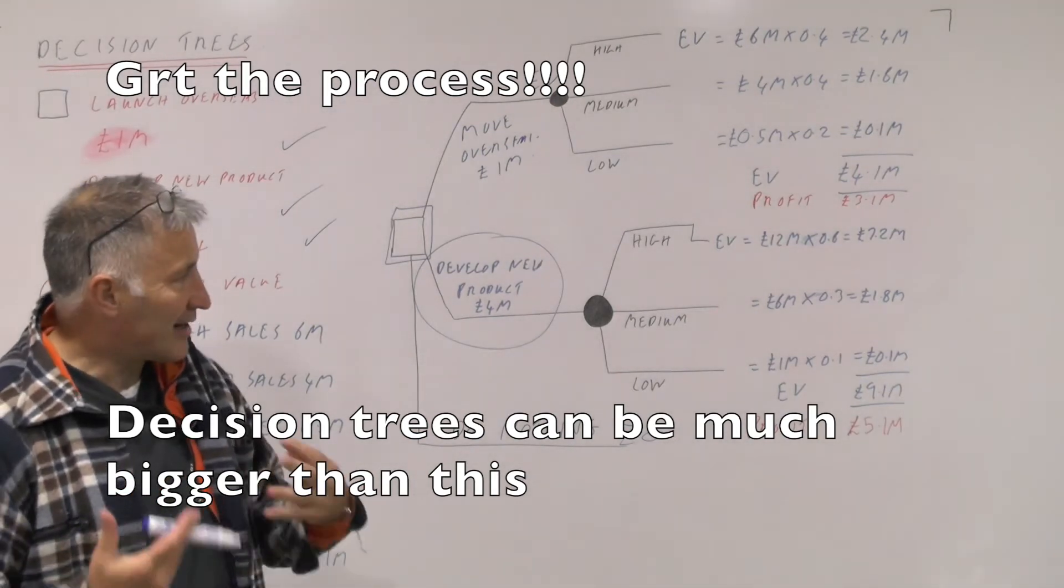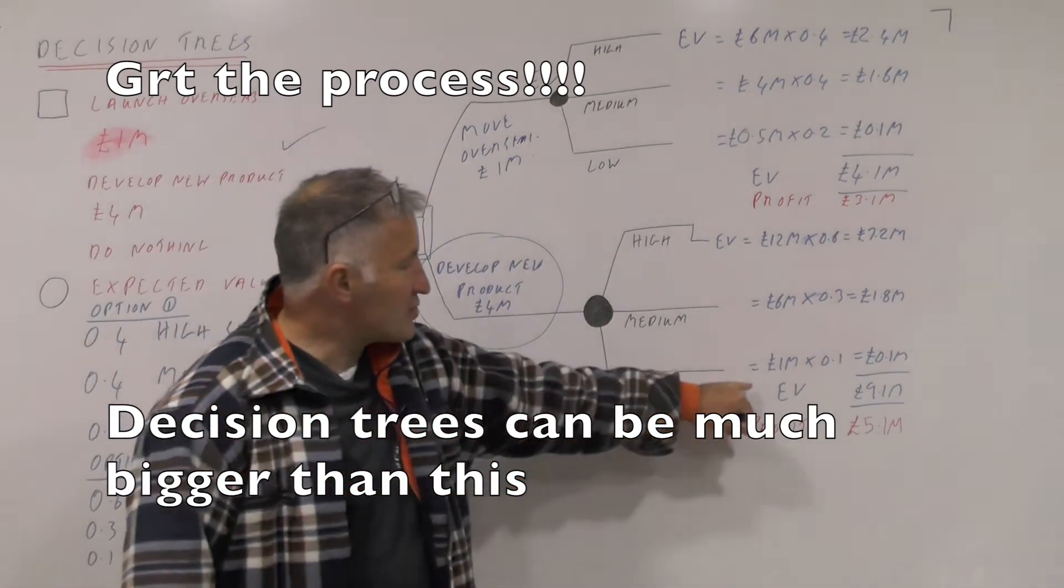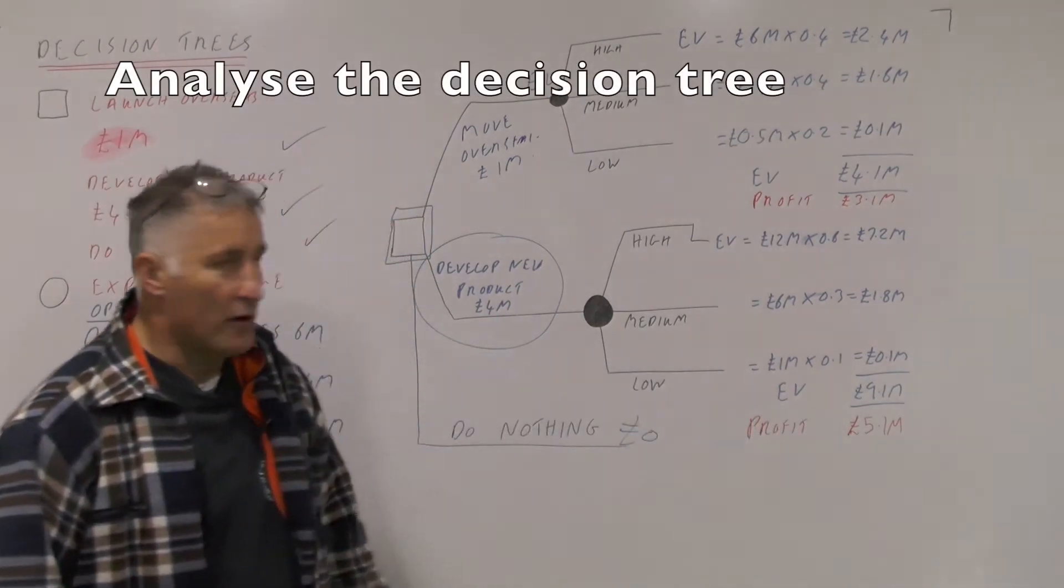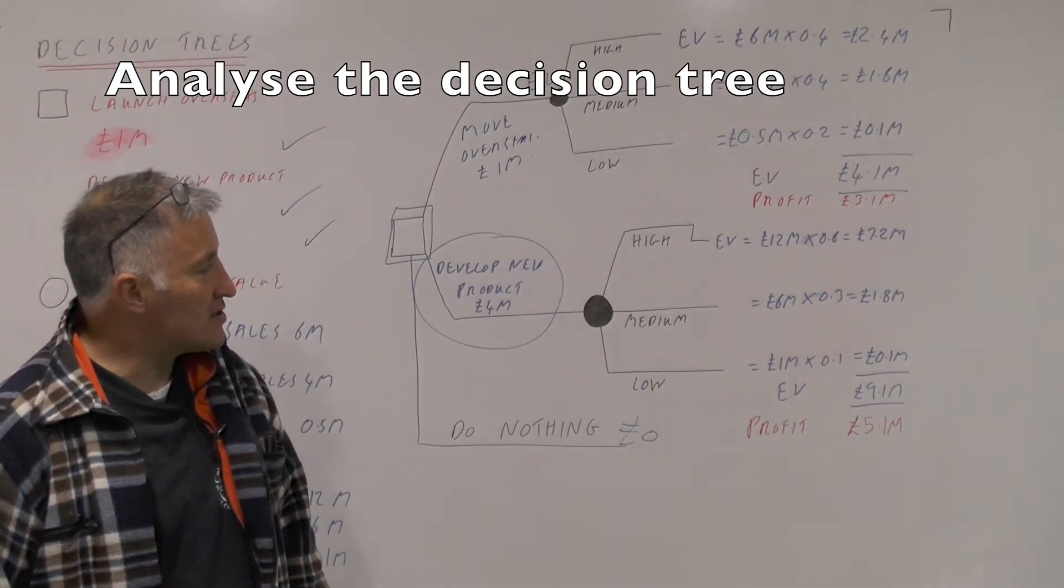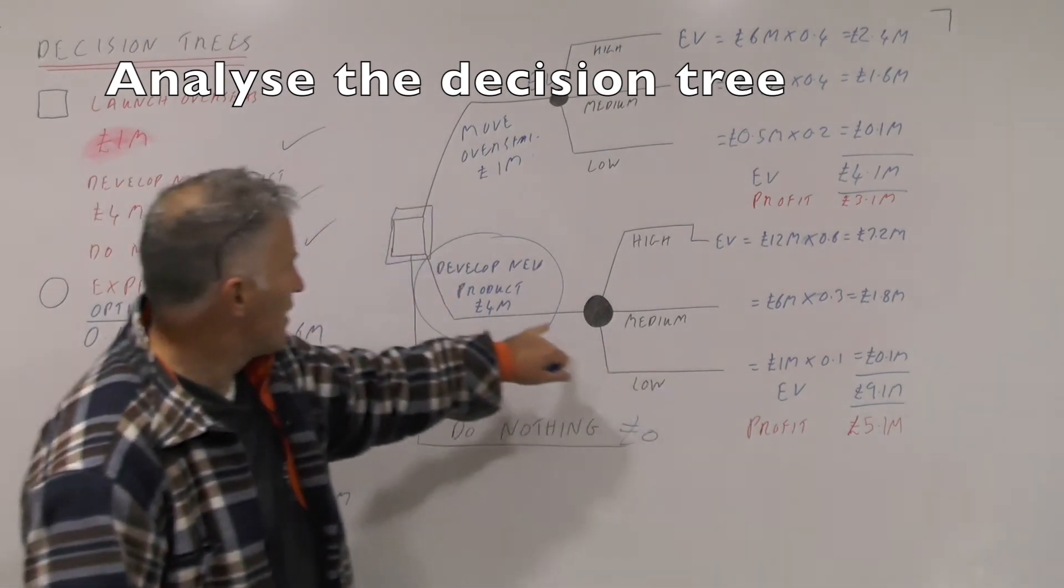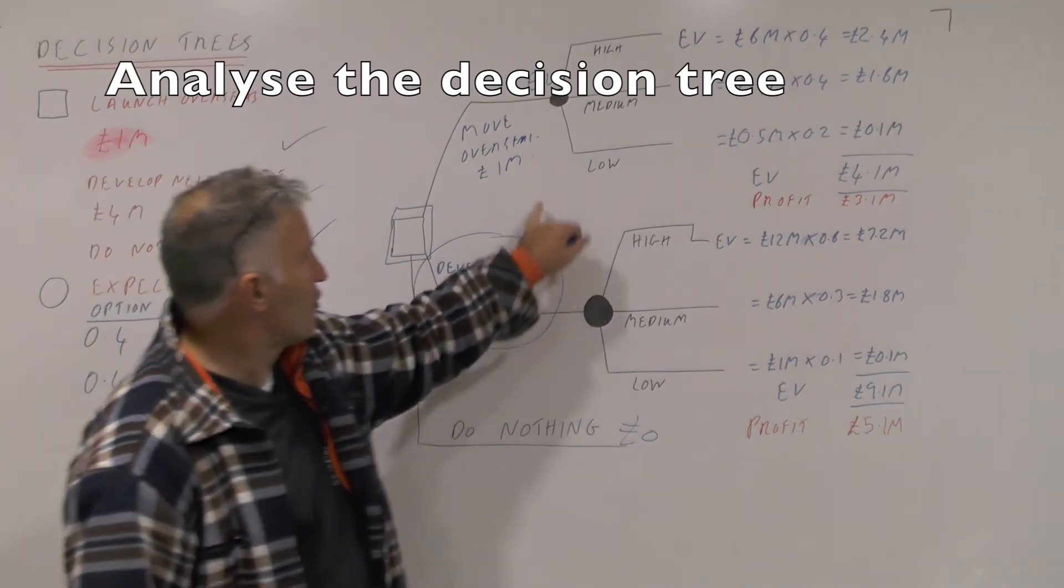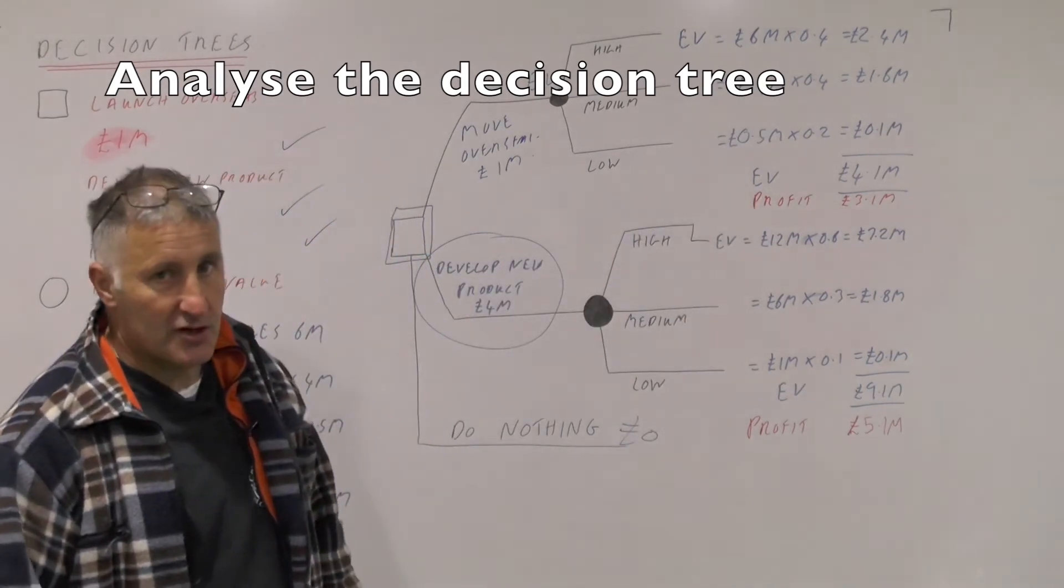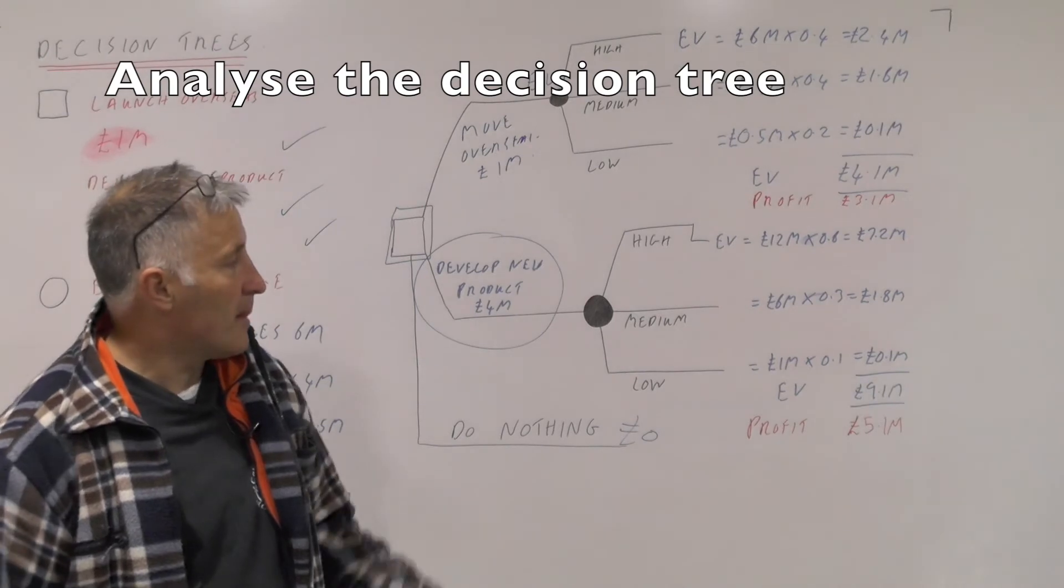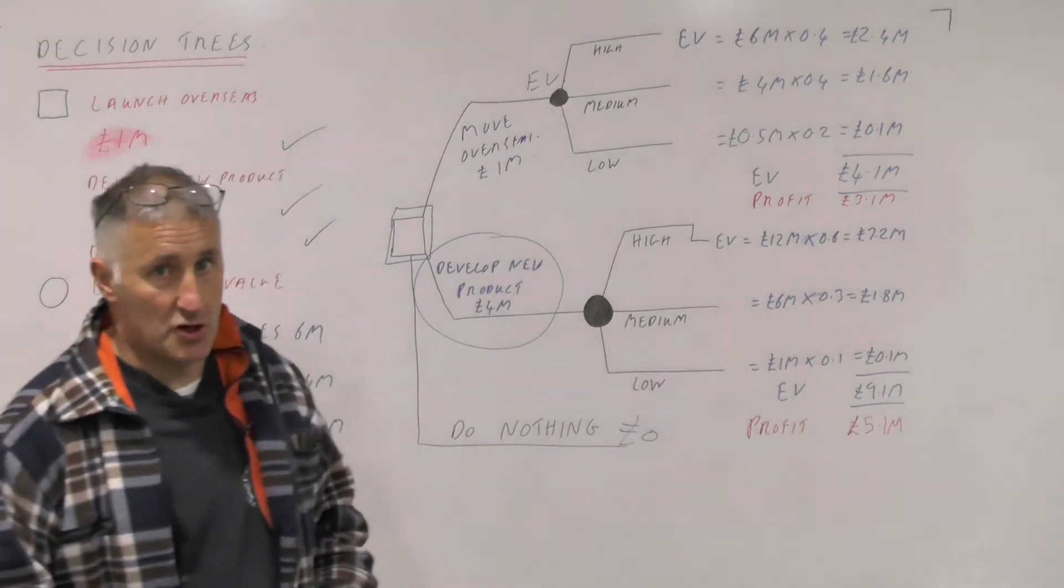Clearly there are weaknesses with that, because there's a 10% chance that you may only make £1 million. Therefore you may decide this is going to be the least risky option, because if you only make £1 million and you spent £4 million, then clearly you're going to lose £3 million. However, you're only going to lose half a million pounds on the overseas option, but there's a 20% chance that you could lose half a million pounds. So it's a little bit more complicated than that - the overall losses are clearly much bigger.